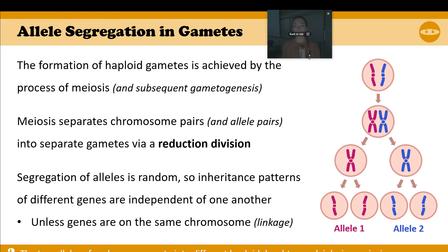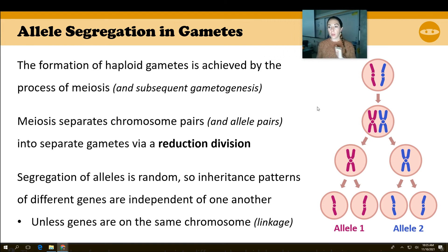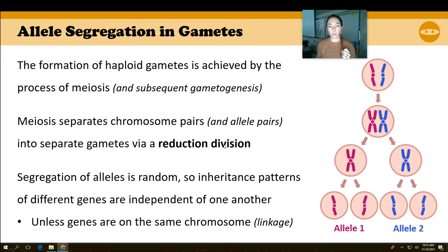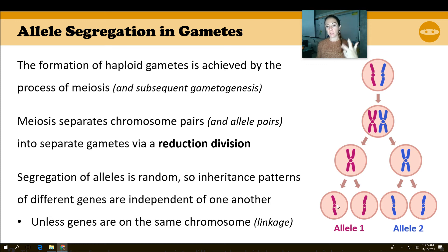So here is allele segregation. We've already looked at this in meiosis. The key thing to add to your notes: meiosis separates — reduction division. Remember this is called reductive division because it doubles first and then divides and then divides again, so that by the second division you get half the amount. We get random assortment, we get crossing over, and now we've learned about the law of segregation — unless the genes are linked.